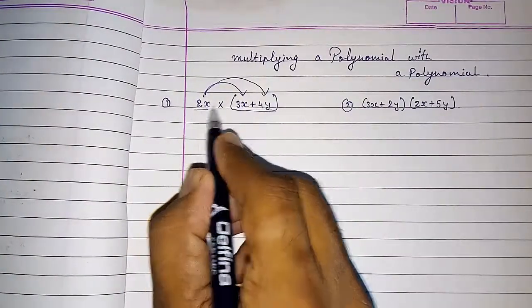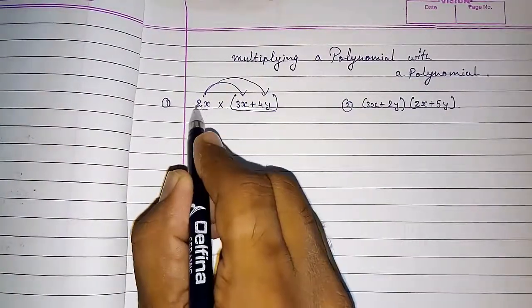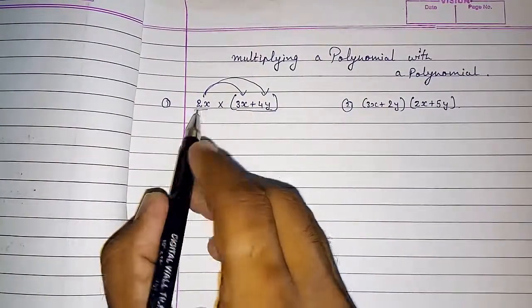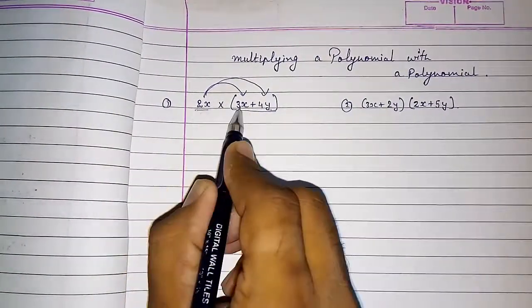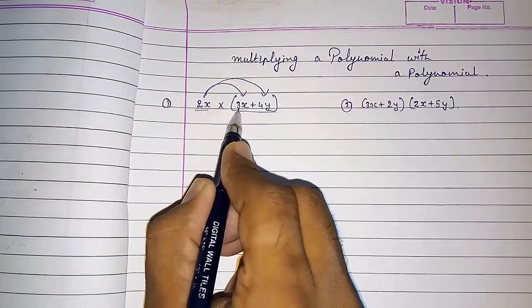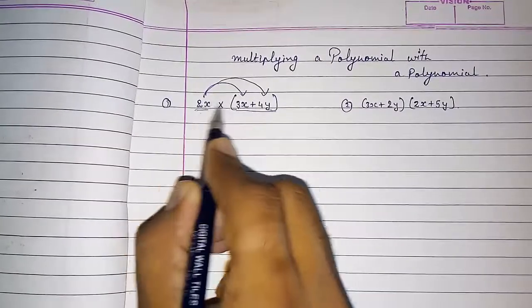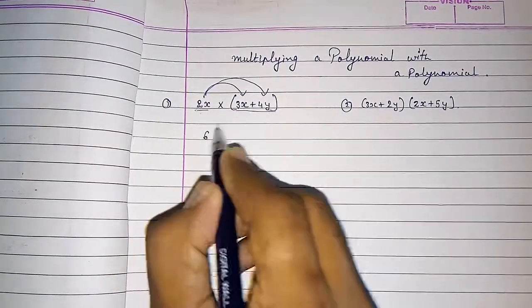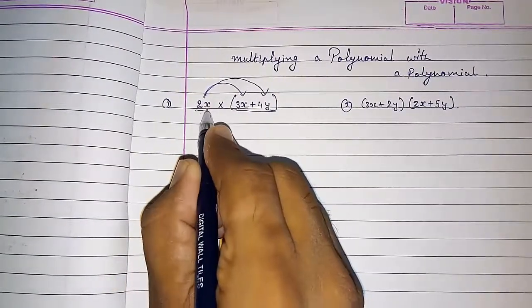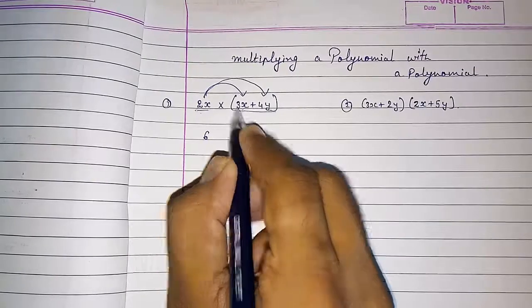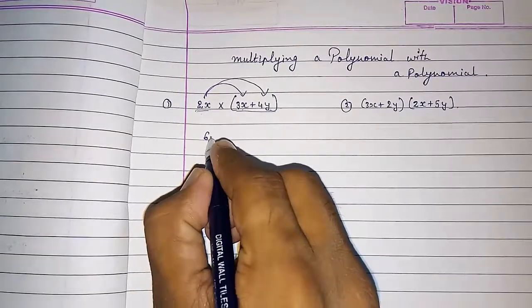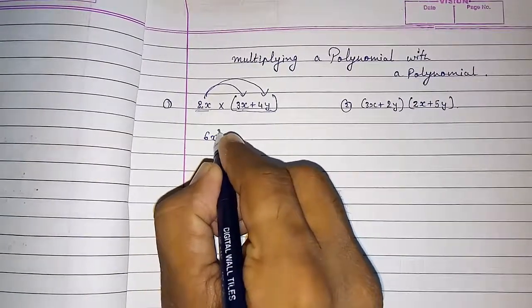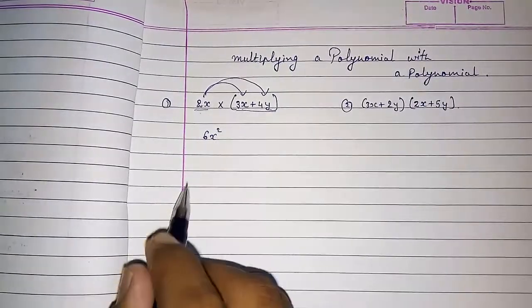That means 2x into 3x. So first we have to multiply the constants: 2 into 3 is 6. And then the variables: x into x is x square. So the answer is 6x square.